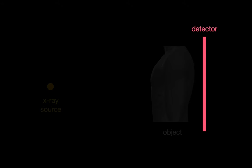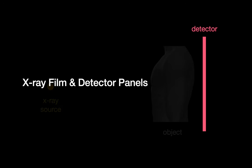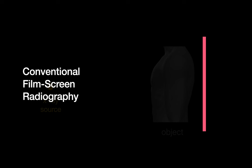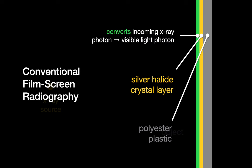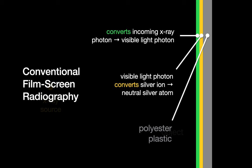Now, let's take a close look at the x-ray film or detector panel that captures our portable chest x-ray image. There are three strategies for doing this, and one of them has been in use since the late 19th century: conventional film screen radiography. With conventional film screen radiography, we capture a patient's chest x-ray image using a sheet of plastic that's coated with a layer of light-sensitive silver halide crystals and then coated with a layer of phosphorescent crystals. Whenever an x-ray photon hits the phosphorescent crystal layer, the phosphorescent crystal at that spot converts the x-ray photon into a photon of visible light. The visible light photon then converts an adjacent silver ion within the silver halide layer into a neutral silver atom.